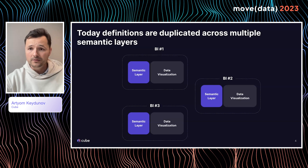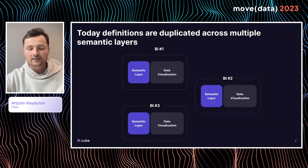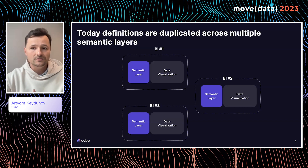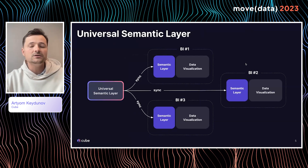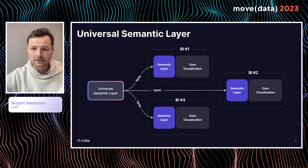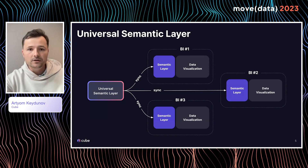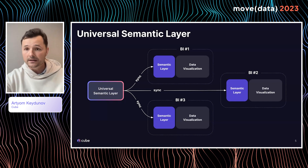This creates an interesting problem: we now have many semantic layers embedded into different BI tools. Sometimes they're advanced, sometimes less advanced, but the fact is we have all of them at once. In a modern organization, this leads to inconsistency. That's where people have started conversations in the last two or three years — we probably need one universal semantic layer that can hold all these data definitions and give them to the different semantic layers within BI tools, so we can ensure data is consistent across all these different places.